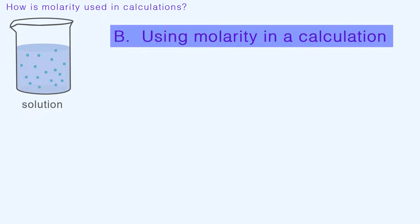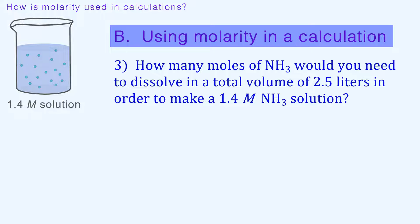Now, two problems to look at using molarity in a calculation. Problem number 3 asks how many moles of NH3 would you need to dissolve in a total volume of 2.5 liters in order to make a 1.4 M NH3 solution. Note that 1.4 molar is not a specific amount.